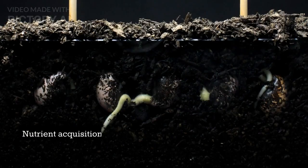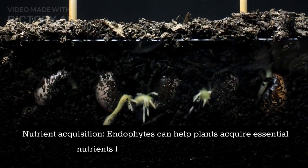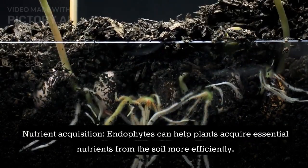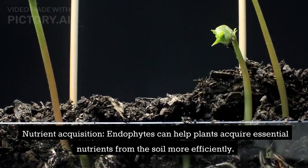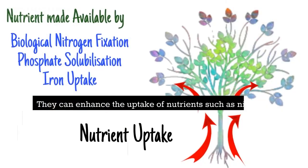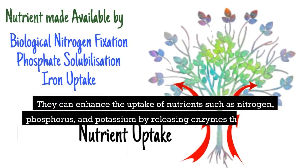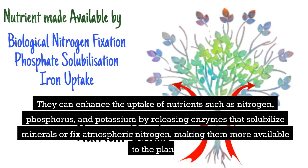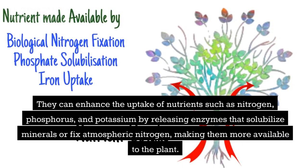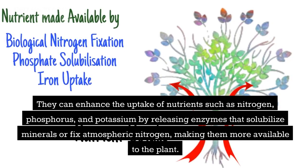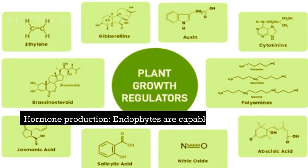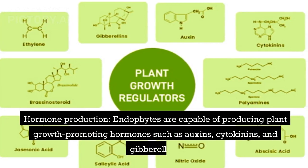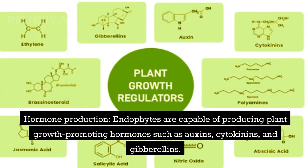Nutrient acquisition: endophytes can help plants acquire essential nutrients from the soil more efficiently. They can enhance the uptake of nutrients such as nitrogen, phosphorus, and potassium by releasing enzymes that solubilize minerals or fix atmospheric nitrogen, making them more available to the plant.